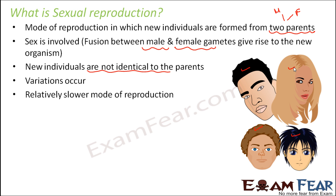For example, if you take the example of human beings, it is actually a very slow process. A child takes almost 9 months to take birth — so that is for one child. And again, getting subsequent children cannot be a very fast process.